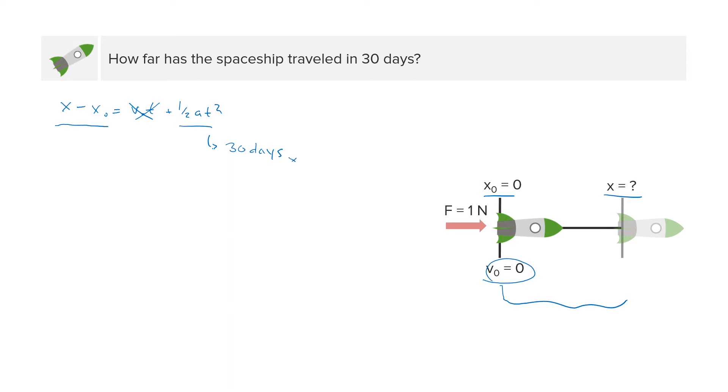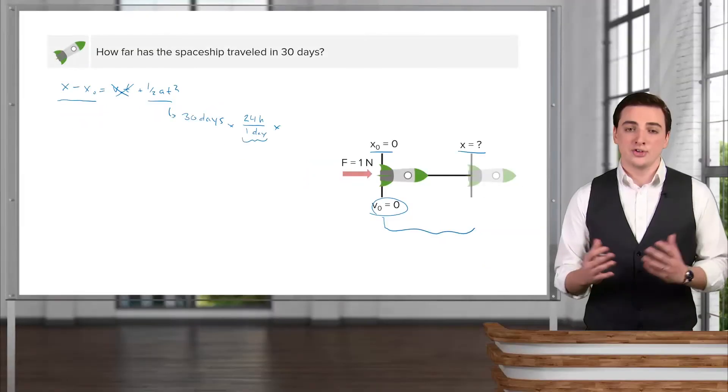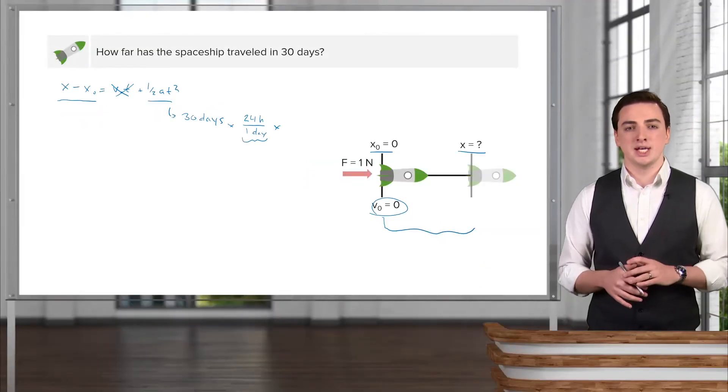To convert the units of days into seconds, we'll keep multiplying by what are essentially units of one. In other words, there are 24 hours in one day. So this term here is actually just the number one, because 24 hours in one day are the same thing. So I'm not changing the number 30 days. This is a way to convert its units by not changing the number,